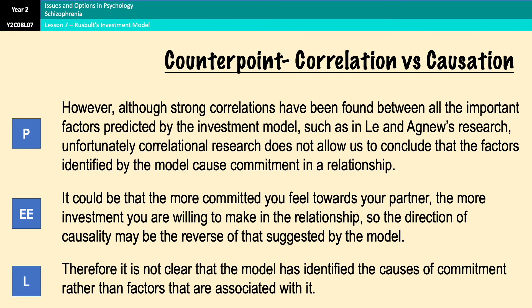However, a counterpoint to the Lee and Agnew research is that it is correlational. Although strong correlations were found between all the important factors predicted by the model, correlational research doesn't allow us to conclude that those factors cause commitment. For example, it could be that the more committed you feel, the more investment you are willing to make — meaning the direction of causality might actually be the reverse of what the model suggests. Therefore, the model may have identified factors associated with commitment rather than the causes of it.